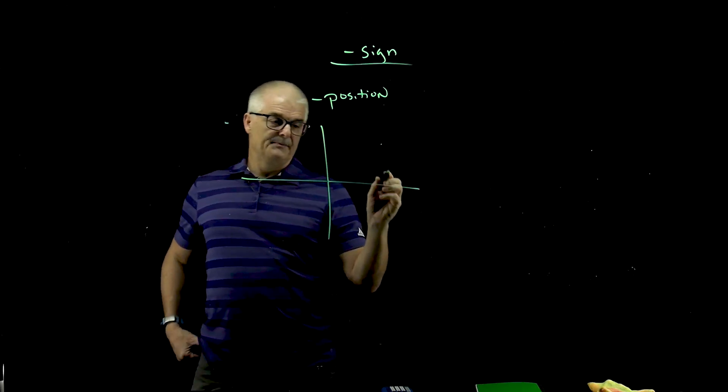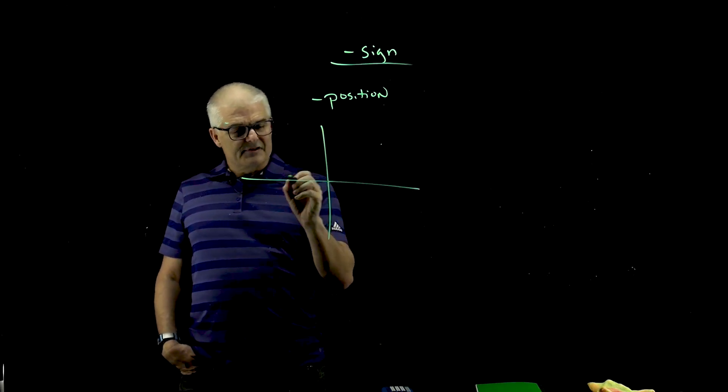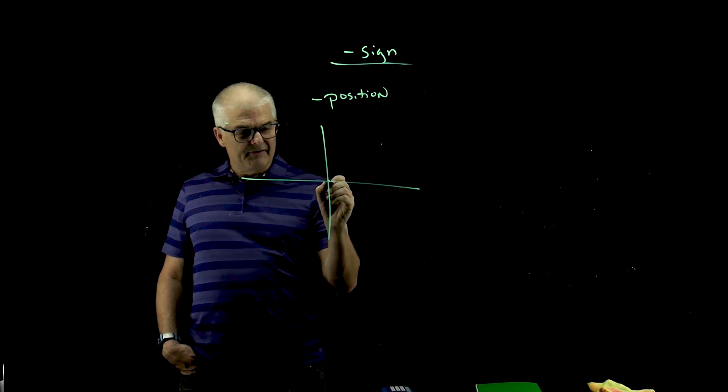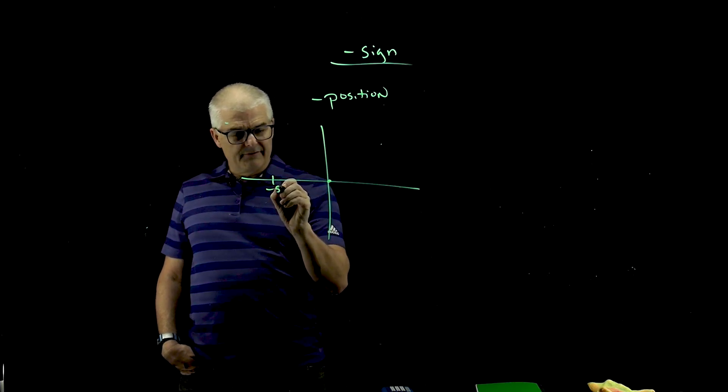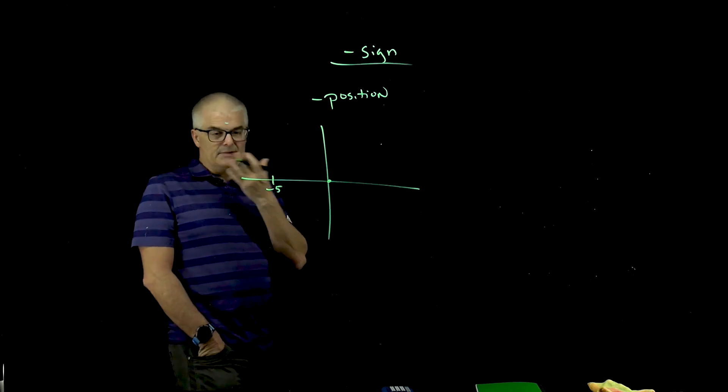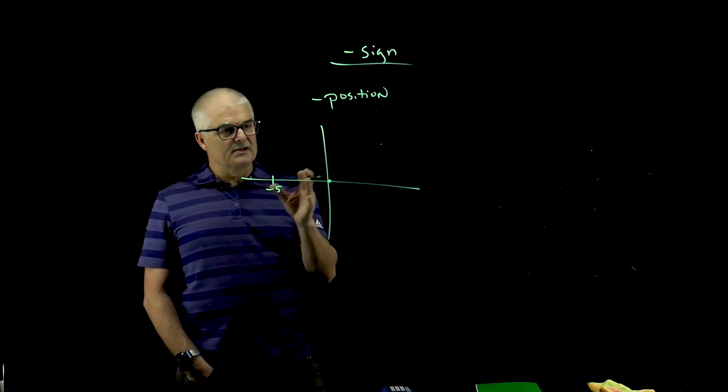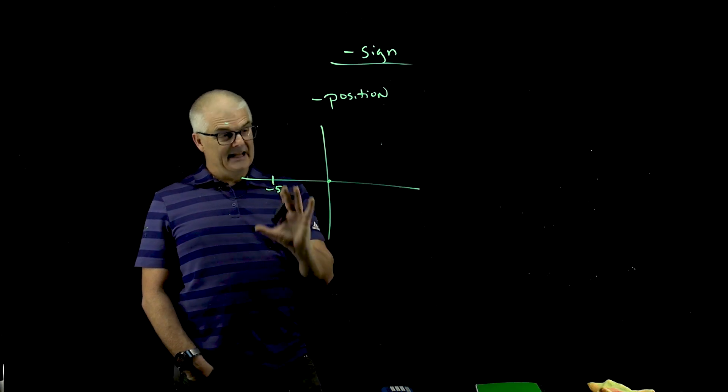But you can have a negative position. I send back to the coordinate plane. So if something is going to define the origin, I can say that this point right here is at negative 5, right? Negative 5 meters or something like that. So position can be negative.